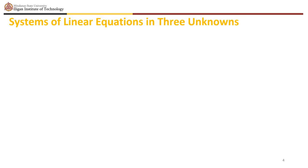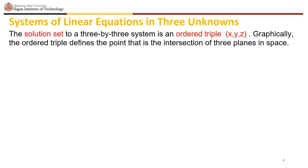The solution set to a 3×3 system is an ordered triple (x, y, z). Graphically, the ordered triple defines the point that is the intersection of three planes in space. You can visualize such an intersection by imagining any corner in a rectangular room. A corner is defined by three planes — two adjoining walls and the floor or ceiling. Any point where two walls and the floor meet represents the intersection of three planes.